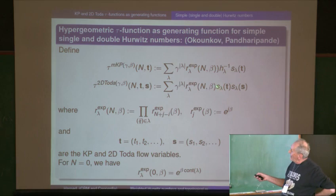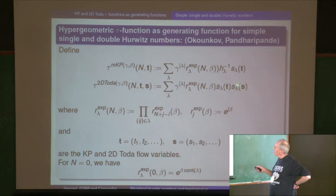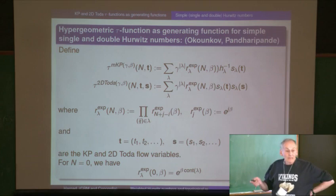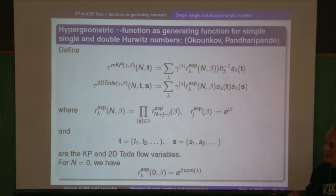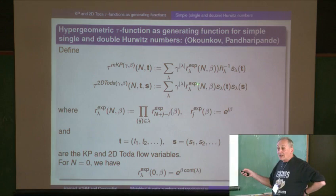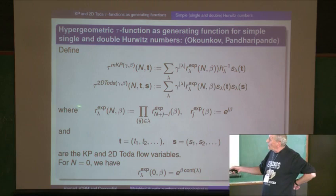2D Toda tau functions have two sets of KP flow parameters, and normally these are not equal. You have a sum over S_lambda and S_mu, and the coefficient depends on both lambda and mu. It looks a bit like the Frobenius formula. They have to satisfy Plücker relations both in the mu's and in the lambda's. This is a very special case when it's diagonal — when all off-diagonal values vanish — and it's easy to see the Plücker relations are satisfied if and only if the coefficients are of the so-called content product form.